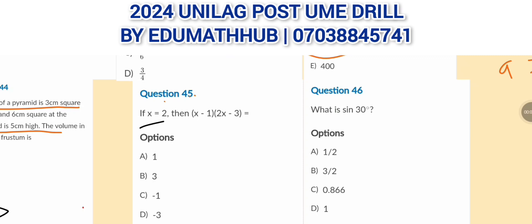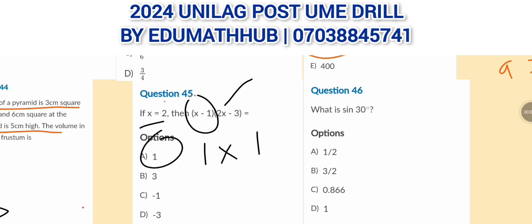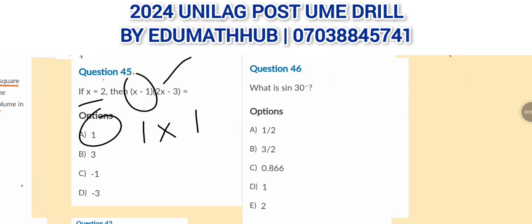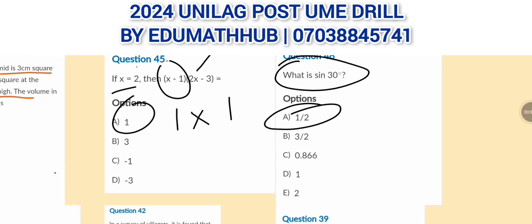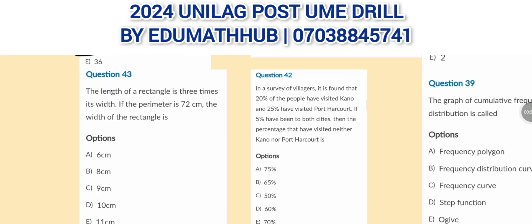For the next question, x = 2. Evaluate (x − 1)(2x − 3): substituting gives (2 − 1)(2×2 − 3) = (1)(4 − 3) = 1 × 1 = 1. You also need to know that sin 30° = 0.5, which is 1/2 — one of the trig ratios to memorize for this exam.